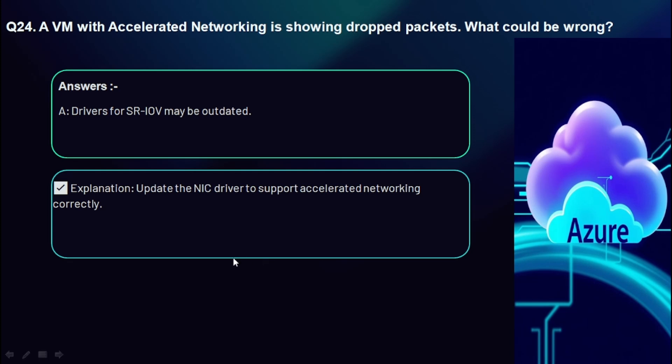Question 24: A VM with accelerated networking is showing dropped packets — what could be wrong? Drivers for SR-IOV may be outdated. Update the NIC driver to support accelerated networking correctly.